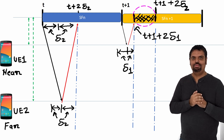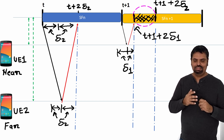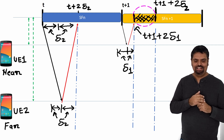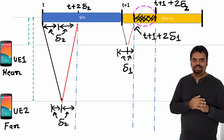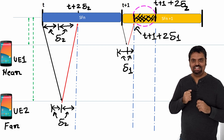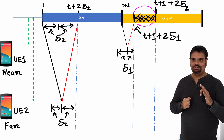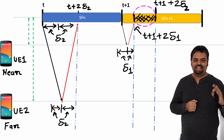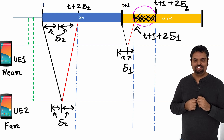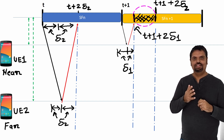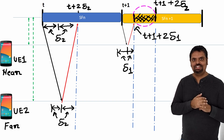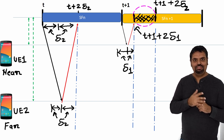Now, until here there is no problem. But at time T+1, the same resource block is allocated to UE1. UE1 accounts for propagation delay 1 and starts transmission at T+1 plus propagation delay 1, and the eNB receives it at T+1 plus 2 times propagation delay 1. As you can see in the red circle, since UE2 has not completed its uplink transmission within the time frame T+1, there is interference at the eNB side.